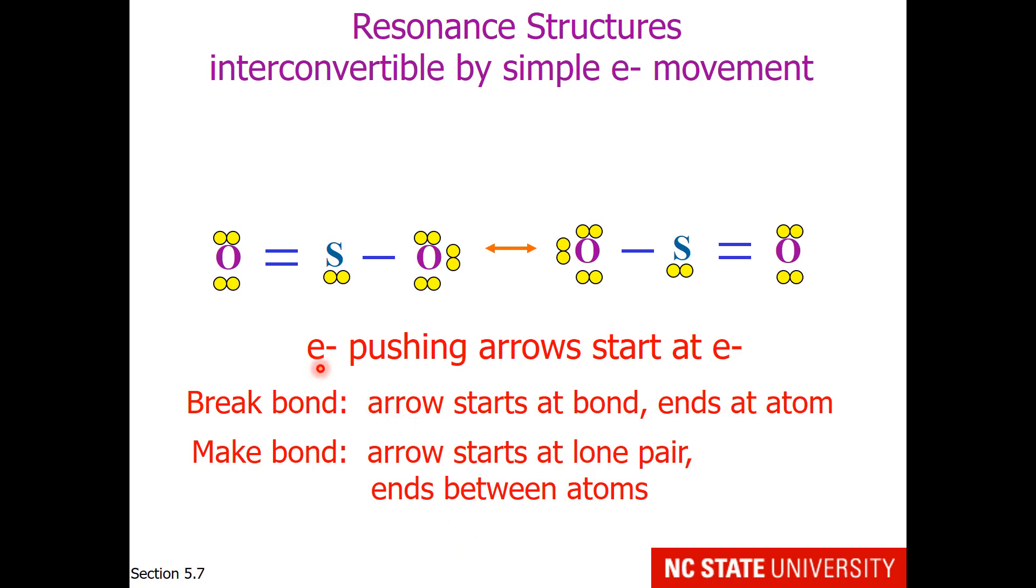This is your introduction to electron pushing arrows, which will be followed up when we get to chapter 12. Electron pushing arrows start at electrons. So if I wanted to convert this structure on the left with the double bond on the left to this structure on the right, here is how I would do this. First of all, I would take a lone pair on that oxygen and turn it into a bond. This would move this from a single bond to a double bond. So we are essentially making a bond. So the arrow is starting at the lone pair and ends between the atoms.